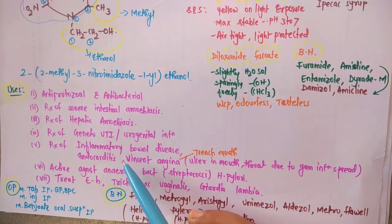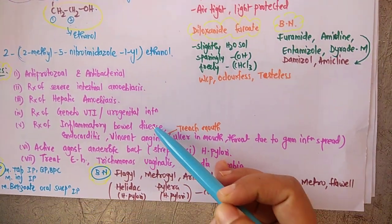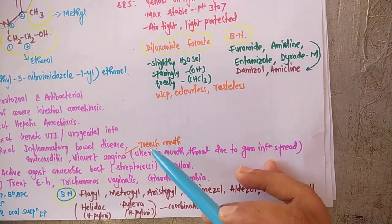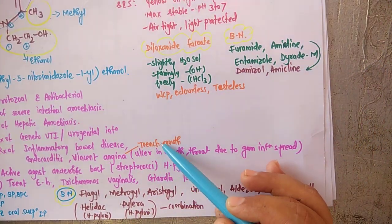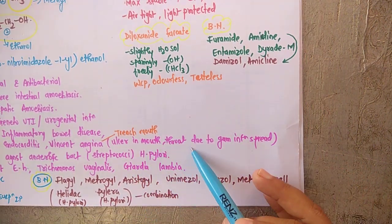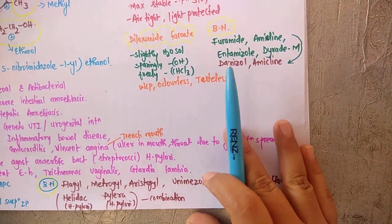It is also used in some extra conditions such as inflammatory bowel disease, endocarditis, or Vincent angina. Vincent angina is a condition, a trench mouth, where ulcers occur in the mouth and throat due to spread of gum infections.